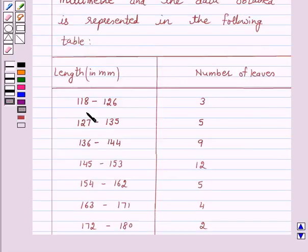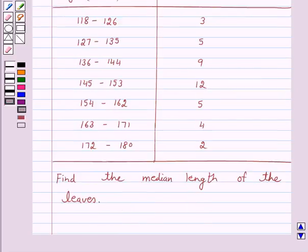If the length in millimeter is 118 to 126, then the number of leaves is 3. If the length is 127 to 135, then the number of leaves is 5. If the length is 136 to 144, then the number of leaves is 9. For 145 to 153, it is 12. For 154 to 162, it is 5. For 163 to 171, it is 4. And for 172 to 180, it is 2.